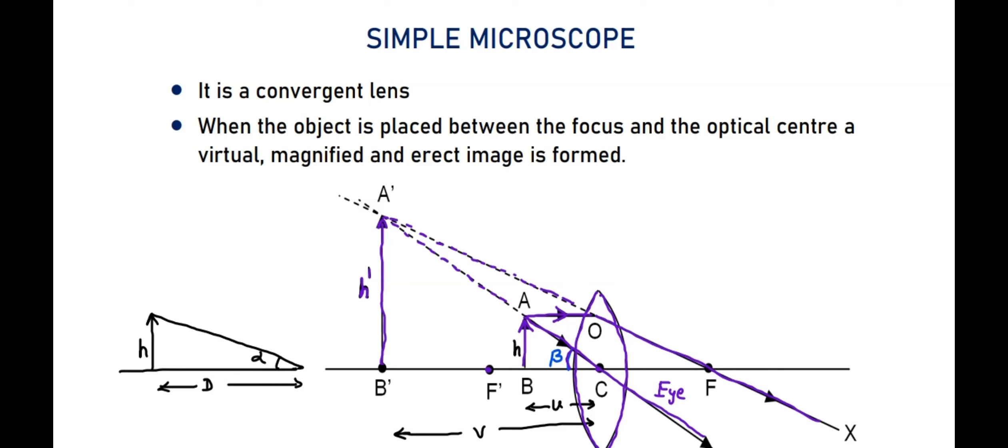The same object without the lens, if the observer is observing, the angle done by this object whenever it is at the least distance of distinct vision makes an angle alpha.